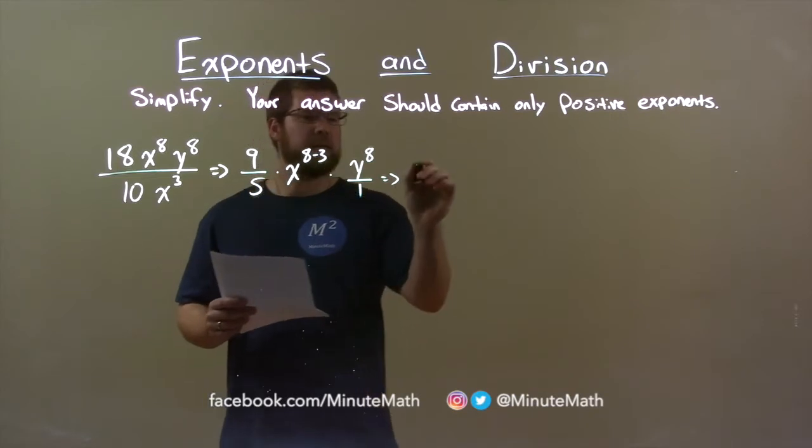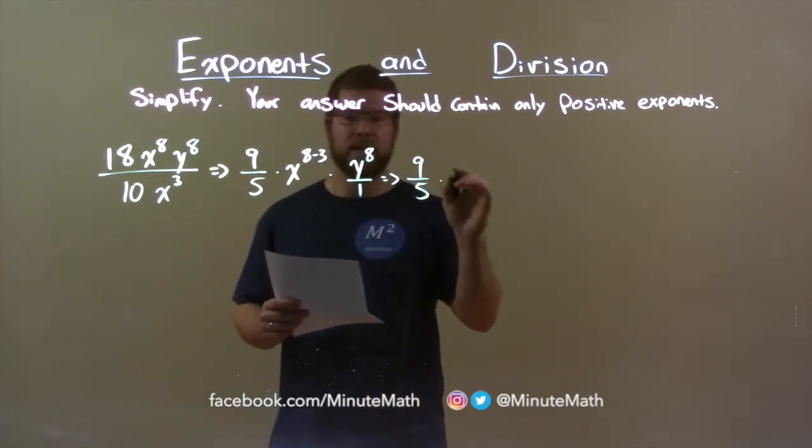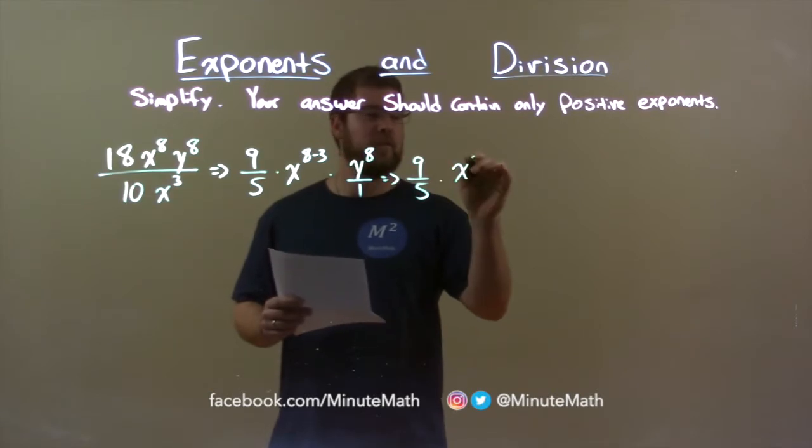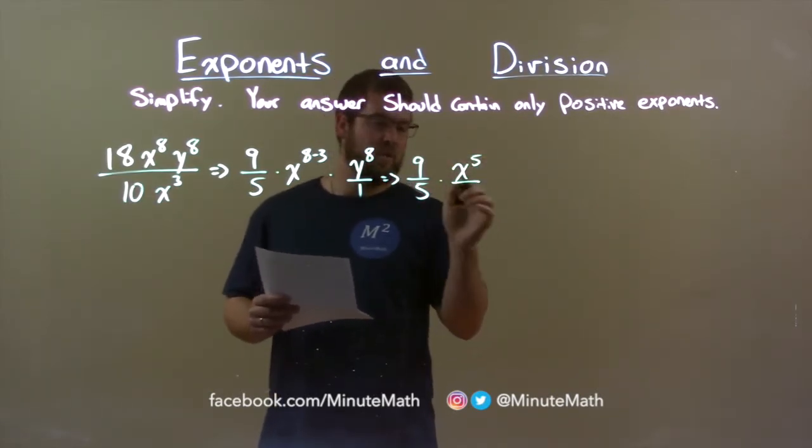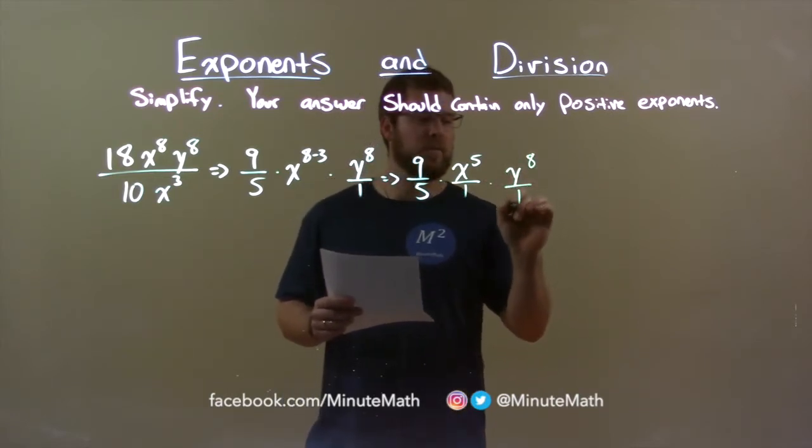Well, let's just simplify. 9 fifths here times x to the 8th minus 3 power. That's x to the 5th power. Now, that's the same thing as over 1 right there. And we have y to the 8th over 1.